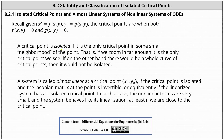A critical point is isolated if it is the only critical point in some small neighborhood of the point. That is, if we zoom in far enough, it is the only critical point we see. If on the other hand there would be a whole curve of critical points, then it would not be isolated.